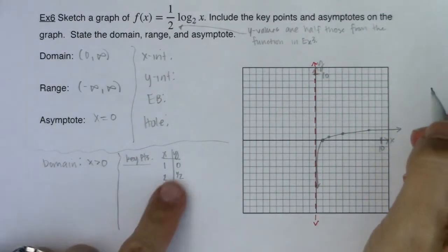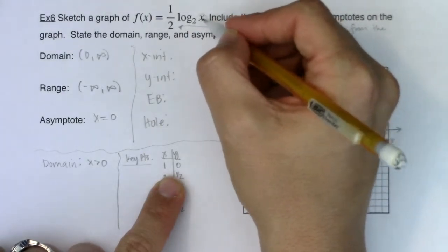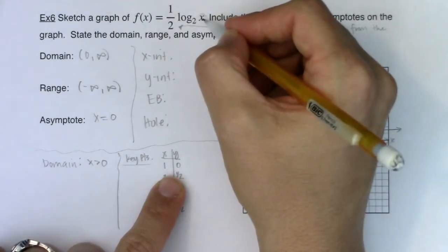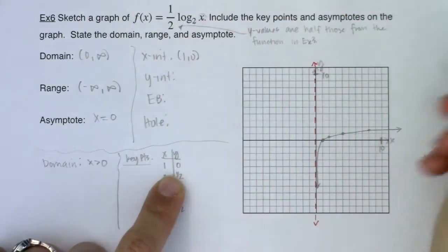So for my x intercept, I actually spotted it. It's always when your argument is equal to 1. Because when your argument is equal to 1, the logarithm is 0 and everything 0s out. So I had an x intercept at 1, 0.